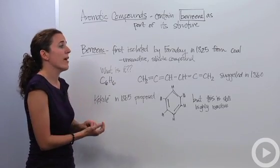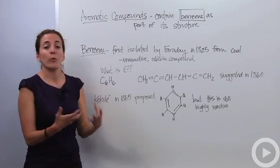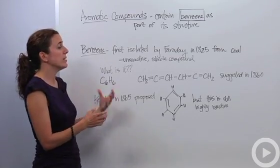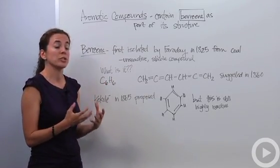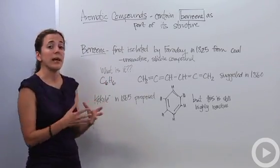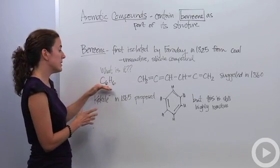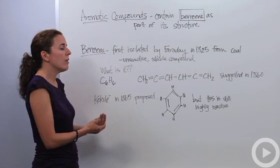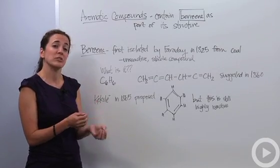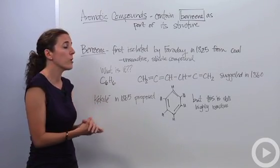It was first isolated by Faraday in 1825 from coal. He discovered this compound and it was very unreactive, a very stable structure. They actually analyzed it and found it to be C6H6. They were able to find the molecular structure, however, they were unable to find what it actually looked like in a structural form.